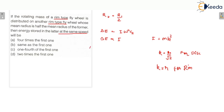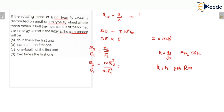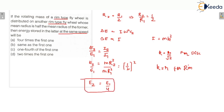We want E2 upon E1, which equals I2 upon I1. I2 is M times R2 squared, and I1 is M times R1 squared. So E2 upon E1 equals R2 upon R1 squared, which is one-half squared, giving us one-quarter. That means the energy stored in the latter would be one-fourth of the energy stored in the former, so E2 equals E1 divided by 4. Option C would be the correct answer.